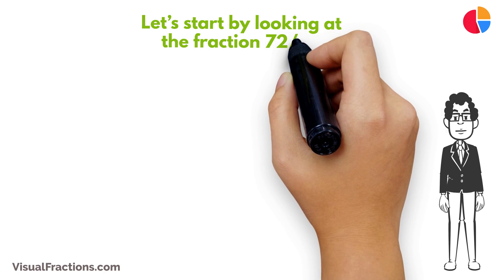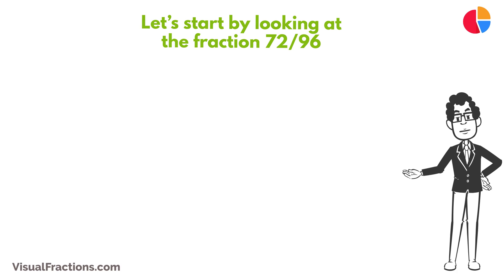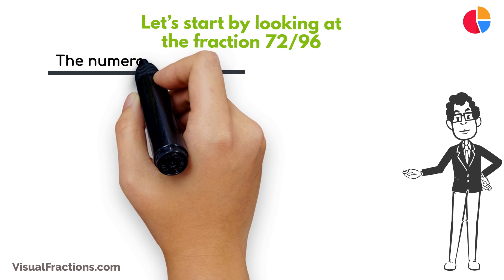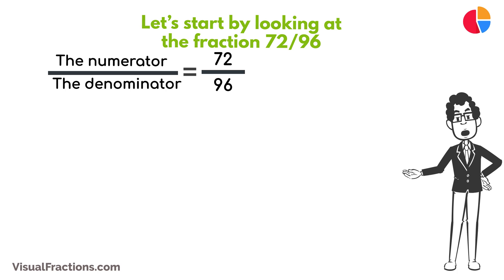Let's look at the fraction 72/96. To simplify it, we'll divide both the numerator and the denominator by their greatest common factor.